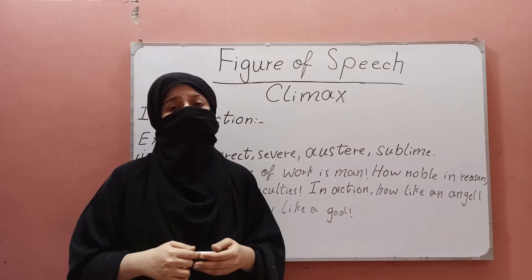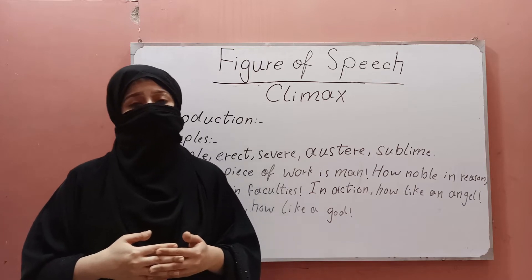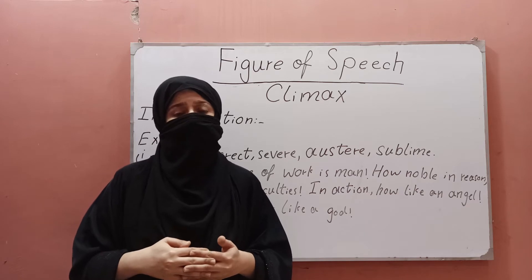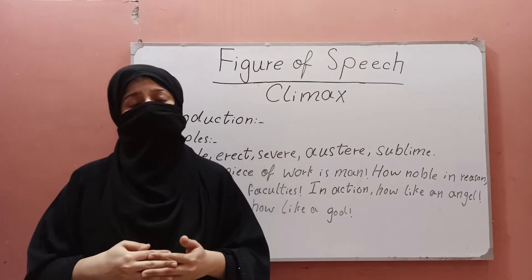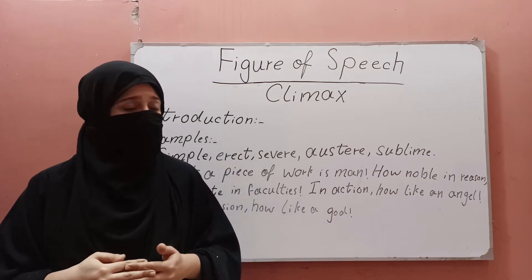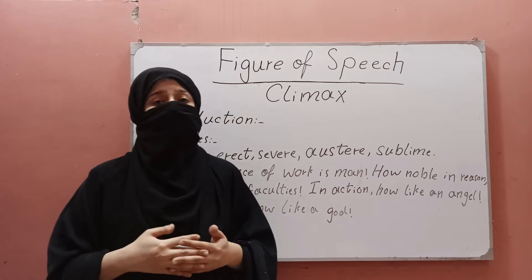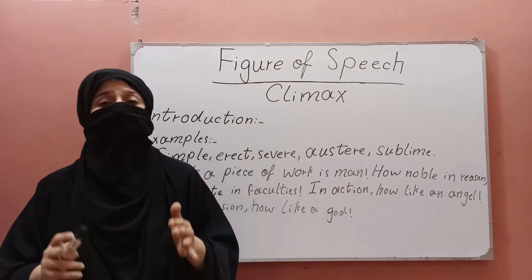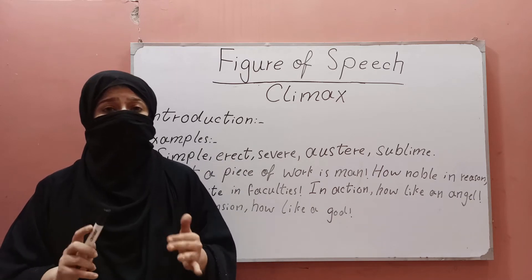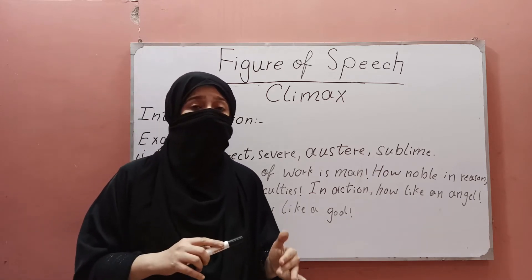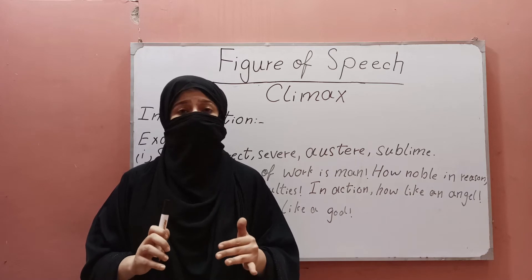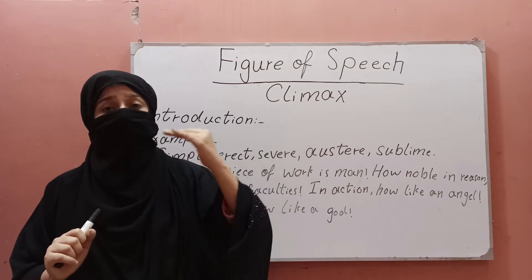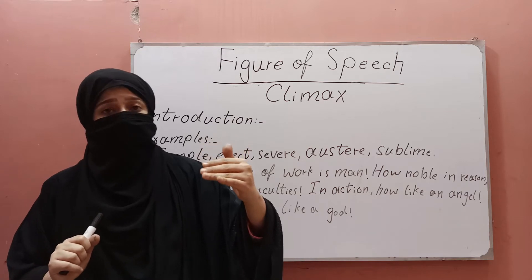A climax is the arrangement of a series of ideas in order of increasing importance. It is called climax when an arrangement is made in which the chief point is at the end — the moment in the plot where the crisis reaches its highest intensity and is resolved.